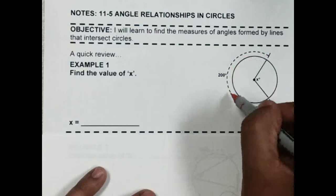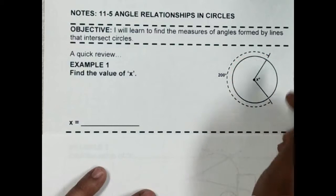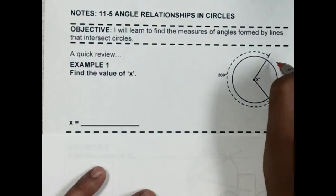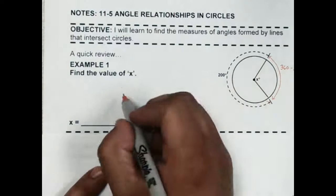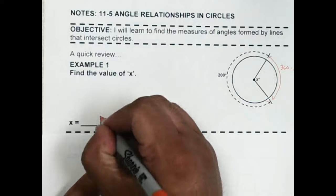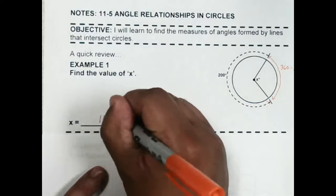Following this dotted line, that's telling me that this arc is 200. So that would mean that this other arc over here would be 360 minus the 200. So then x would come out to be 160 degrees.